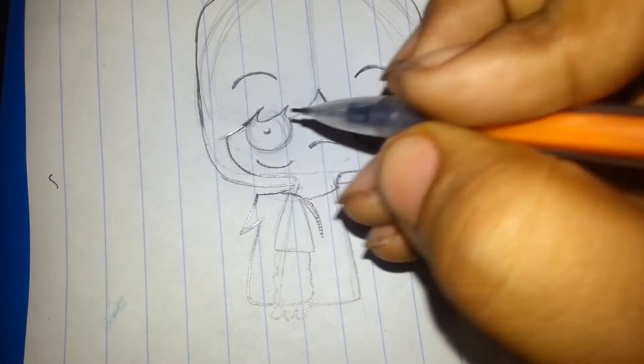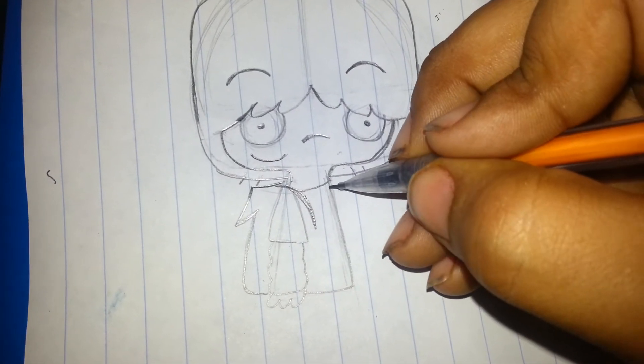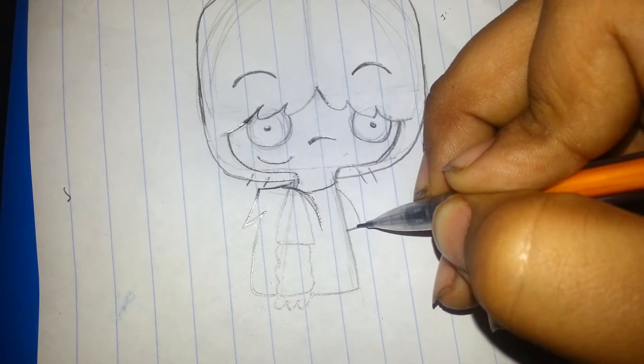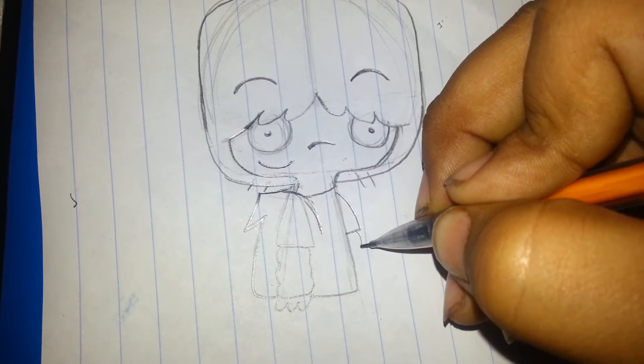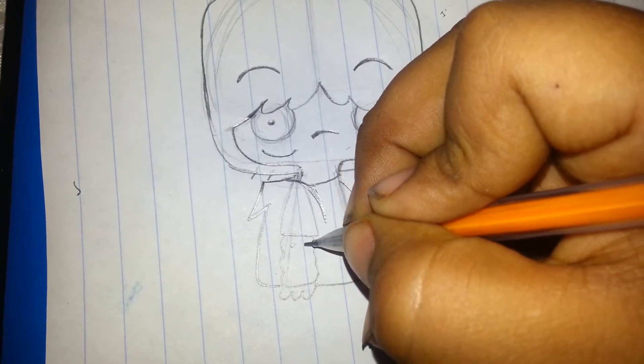He has these two lines on the two strands of hair. And then put the other arm. And then he has dots.